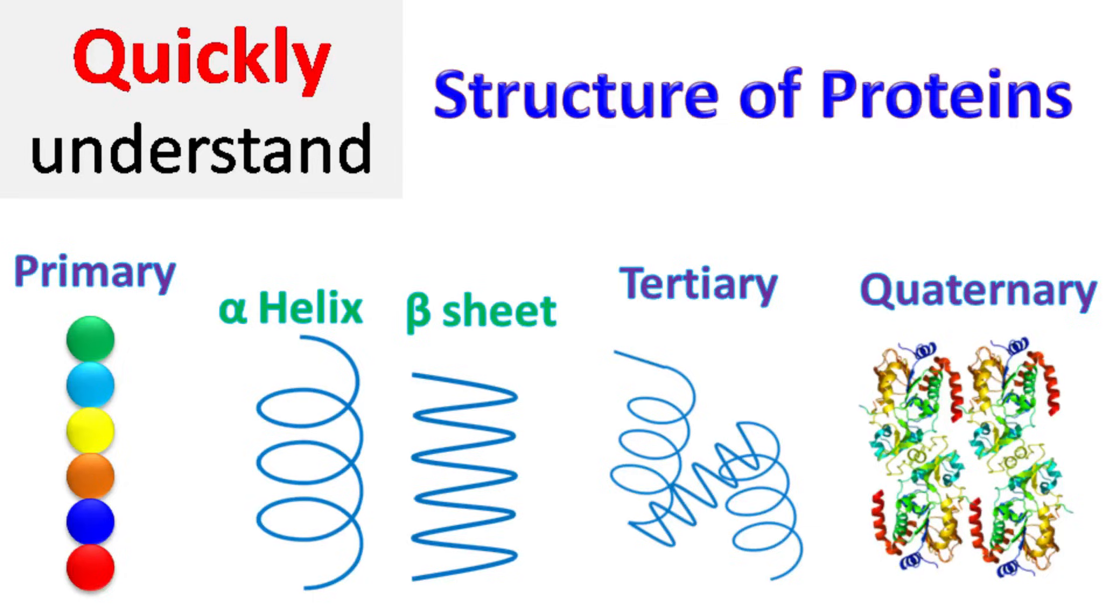The proteins have a primary, secondary, tertiary and a quaternary structure. Let's talk about each of them.